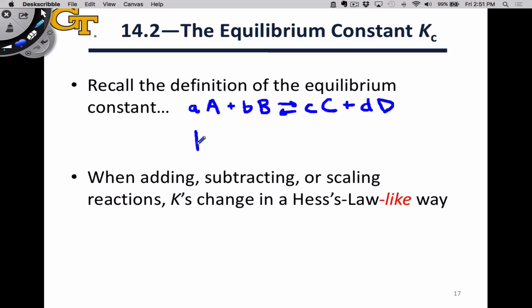We've seen previously that the definition of K or K sub C is the concentrations of products raised to their respective stoichiometric coefficients in the numerator, so C to the C power and D to the D power, divided by the concentrations of the reactants raised to their respective stoichiometric coefficients, A to the A power times B to the little b power in this case.